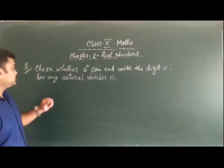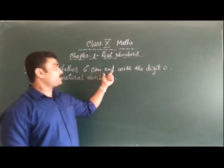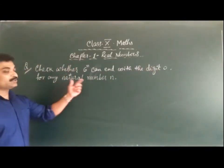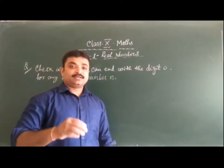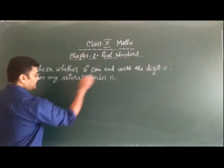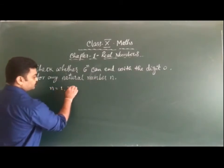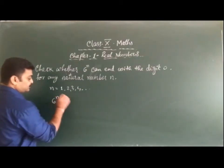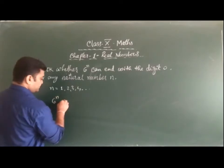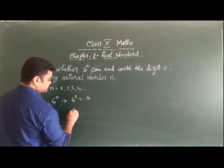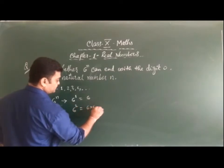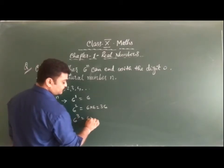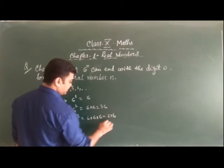Our next question: check whether 6^n can end with the digit 0 for any natural number n. For example, if n = 1, 6^1 = 6. If n = 2, 6² = 36. If n = 3, 6³ = 216, and so on. We have to check whether any value of 6^n ends with zero.